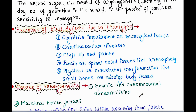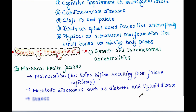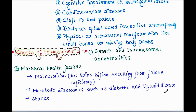Causes of teratogenesis: first, genetic and chromosomal abnormalities. Then maternal health factors like malnutrition — for example, spina bifida resulting from folate or folic acid deficiency — as well as metabolic disorders such as diabetes and thyroid disease, and stress of the mother.